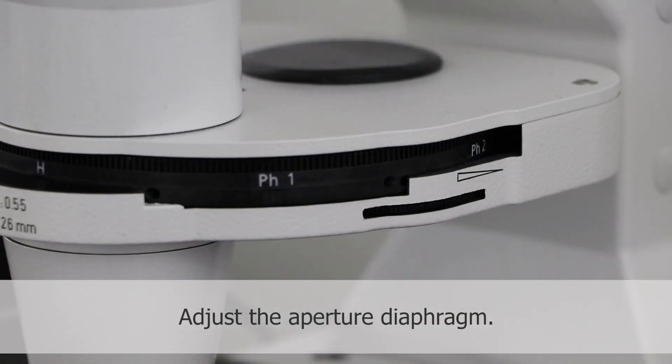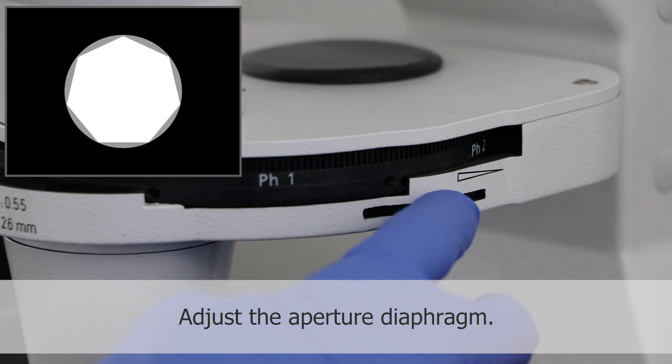Adjust the aperture diaphragm until the visible objective opening is illuminated at least by two-thirds of its diameter.